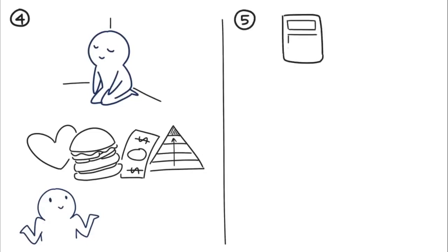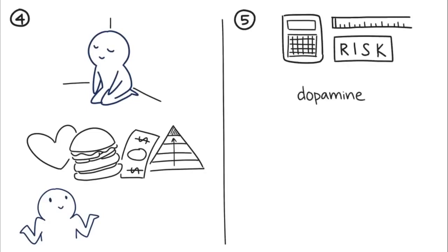Five, introverts are more careful and calculated about what risks to take. This is due to a difference in dopamine activity between introverts and extroverts' brains.